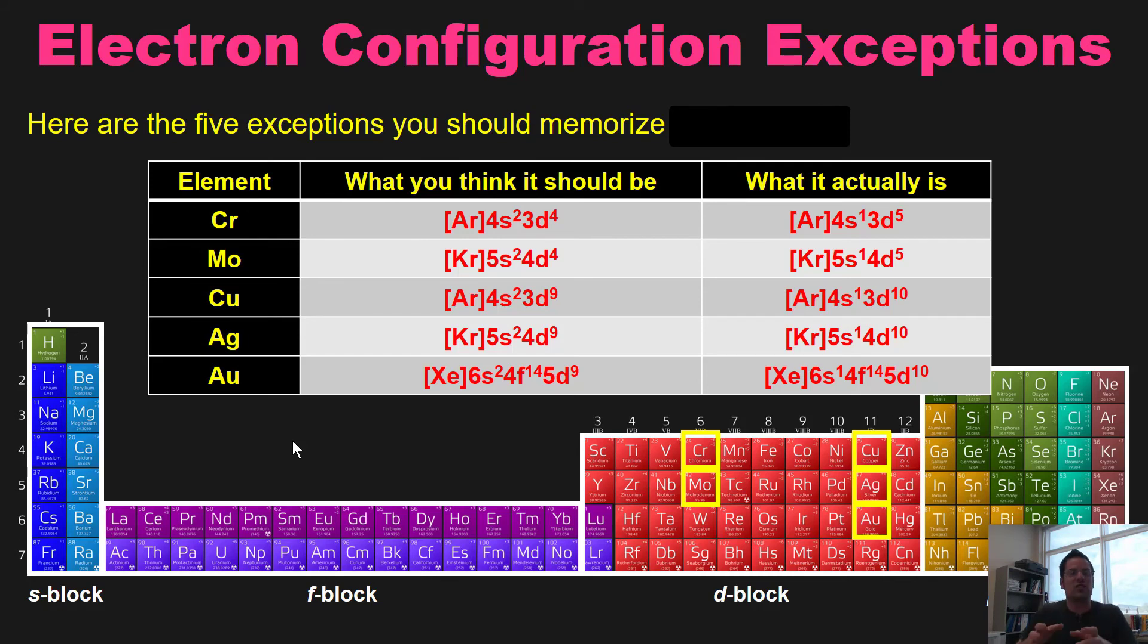And all of these exceptions, these five exceptions that you should memorize, the reason that they are exceptional is because in the case of chromium or molybdenum, they bring down a higher energy s electron into the lower energy d orbitals to be able to get all of their electrons unpaired. Or in the case of copper, silver, and gold, they bring a higher energy paired s electron down into a lower energy d orbital just to get the benefit of having it in a lower energy state. Now, I hope that you'll stay tuned to the videos that follow because I'm going to expand on these concepts and then show you a bunch of cool solved example questions.